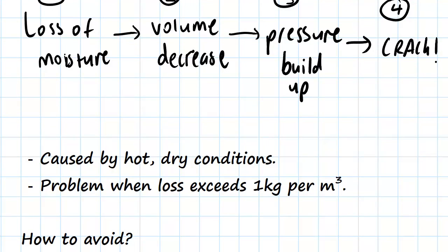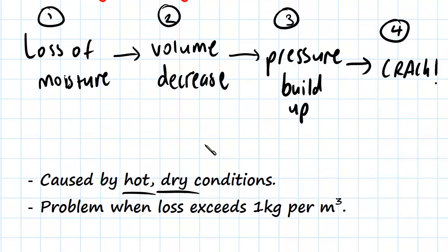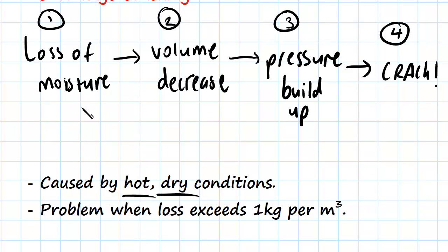So how can this be caused? Well it can be caused by hot and dry conditions. That's going to cause the loss of moisture and the volume decrease. And then the problem occurs really when the loss exceeds 1 kilogram per cubic meter, because once we're getting into 1 kilogram or more per cubic meter, that's when shrinkage cracking is going to happen.